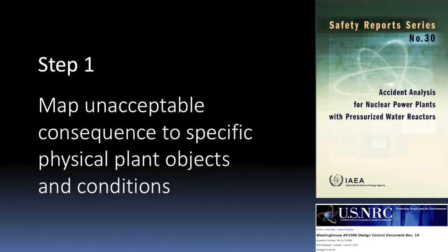Let's go through this process again in more detail. We start with identifying the critical physical systems and then walk our way down to the critical digital systems. The first step is to map unacceptable consequence to specific physical plant objects and conditions. Once I've identified what is unacceptable — like a radiological release — I can identify the physical components where it could actually happen. When dealing with any plant where safety risk exists, most of this work is already accomplished and published. It's open source — it's in the safety analysis.